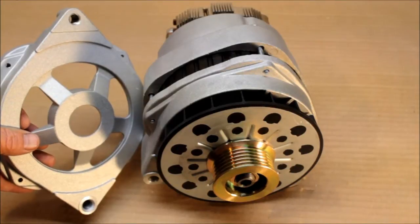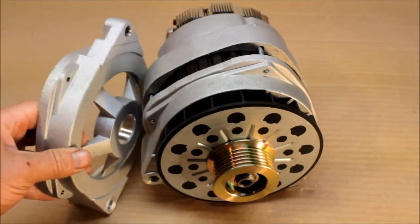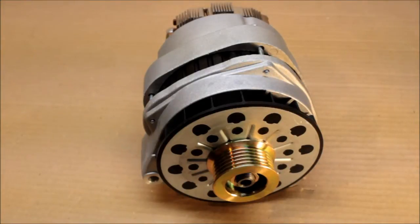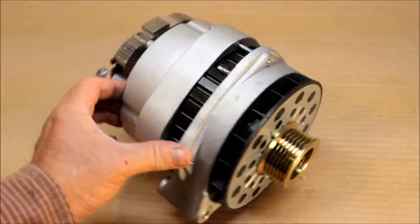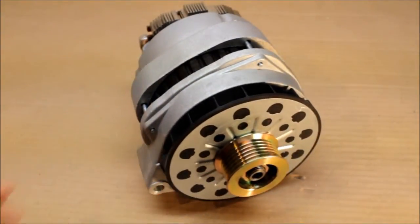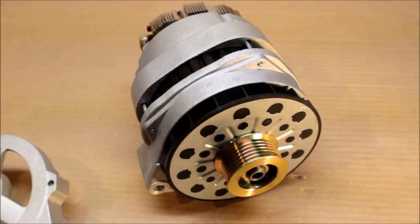But this alternator can come with either one of these housings, which makes it really good. Also, this larger CS 144 a lot of times replaces the CS 130 series alternator, which is a 105 amp unit. They replace those on the 1991 and up GM vehicles with the 350 5.7.